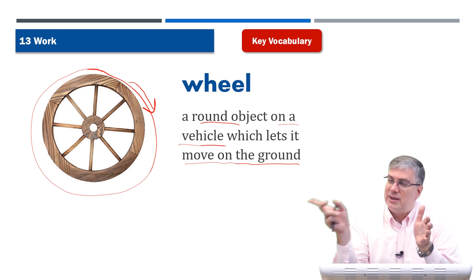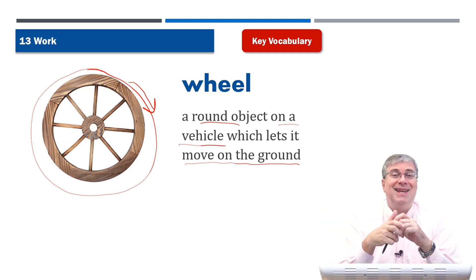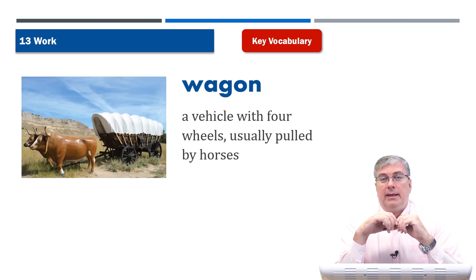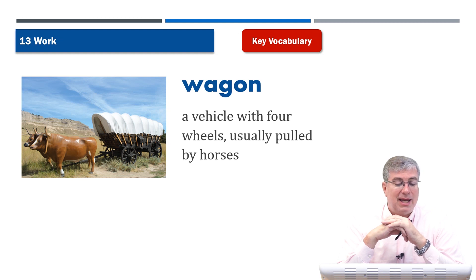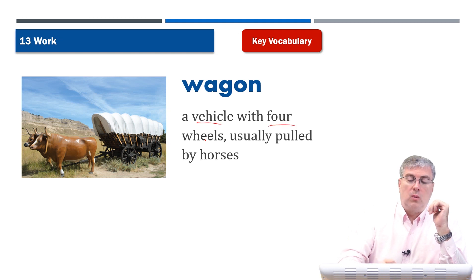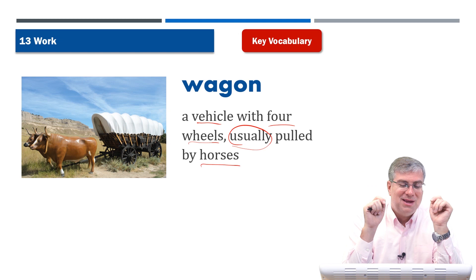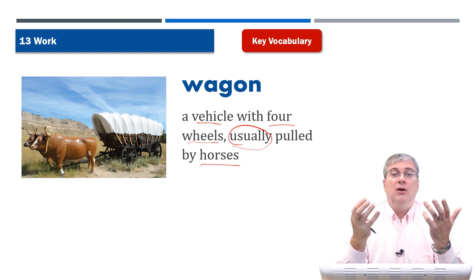Wheels helped people a long time ago do their work more easily. They needed to move something from here to there — if you use wheels on whatever you're using to move it, it's a lot easier. So wheel was a great invention. Now wagon — there are many different kinds of wagon. This is a wagon that the pioneers used to move across the United States and in other countries as well. A wagon is a vehicle with four wheels, usually pulled by horses — though these animals are not horses, since horses don't have those big horns sticking out of their heads.